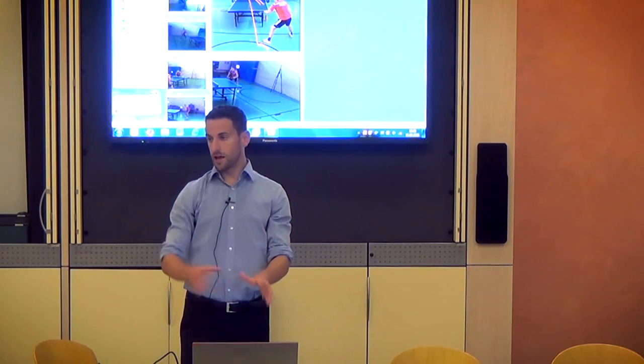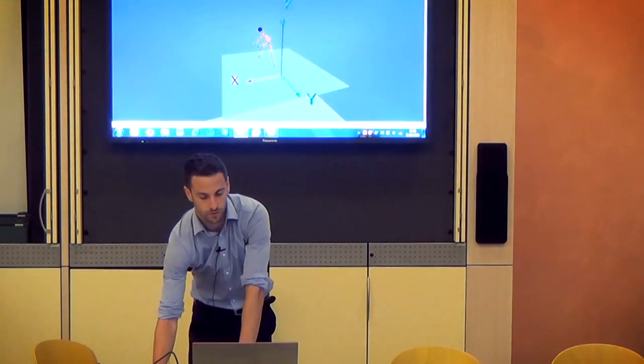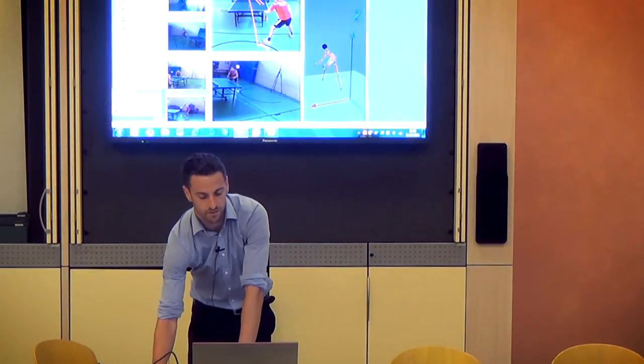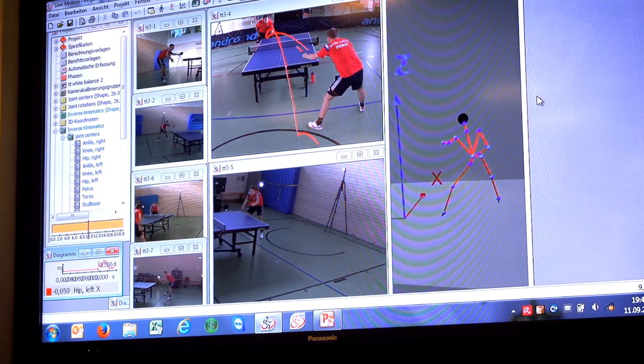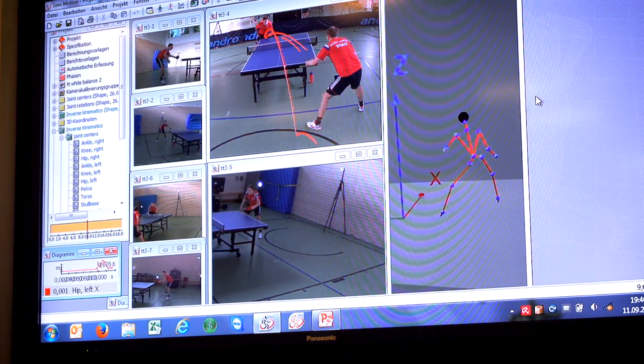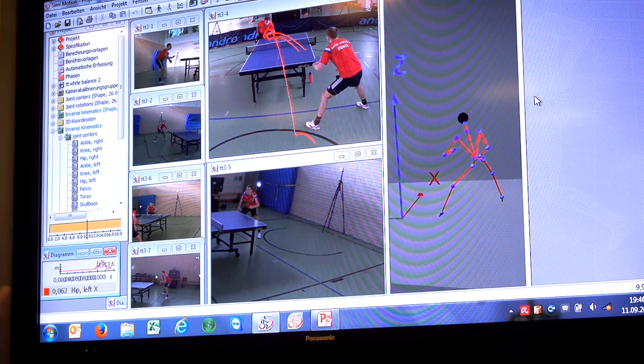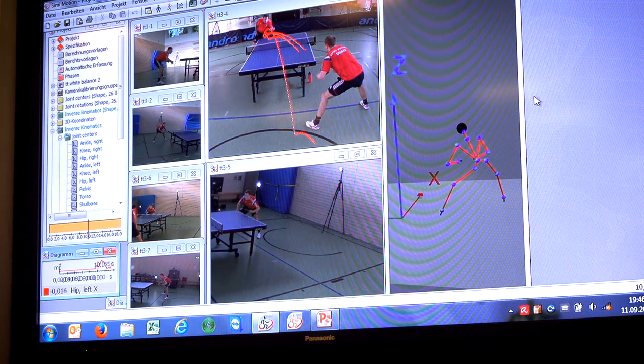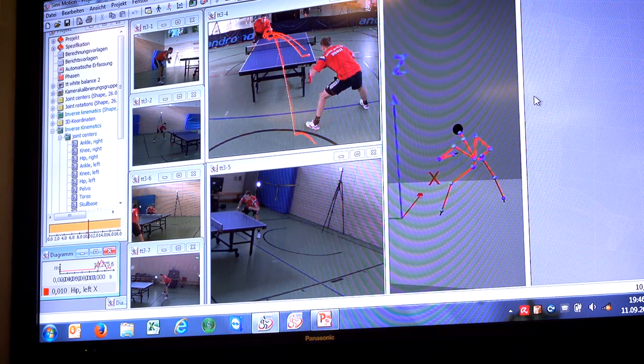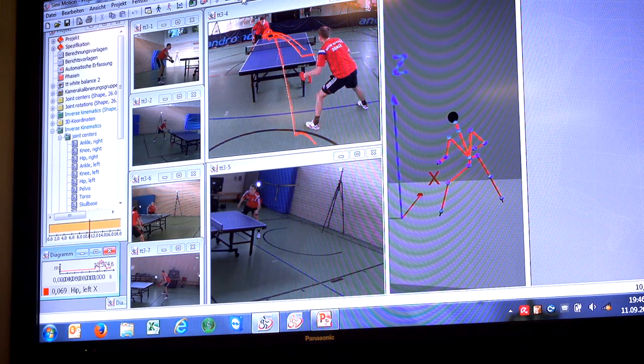Then we can also use these cameras to get out the 3D information. I will just show it to you. This is a skeleton of this guy here. We analyze - I'll just go through the same view. This is actually the movement of the guy. We have an accuracy of a submillimeter, so it's a very precise movement analysis tool.